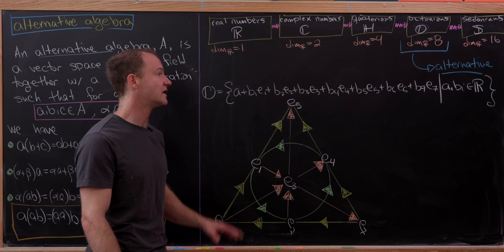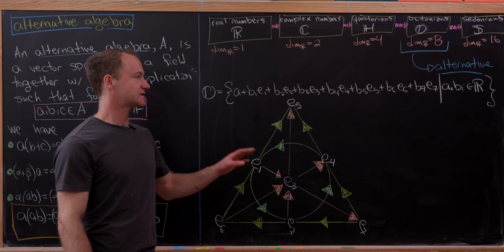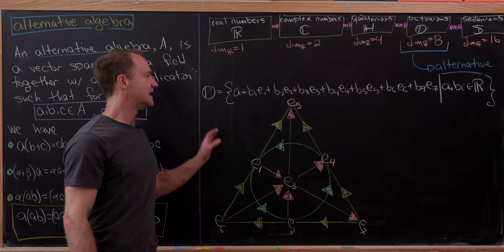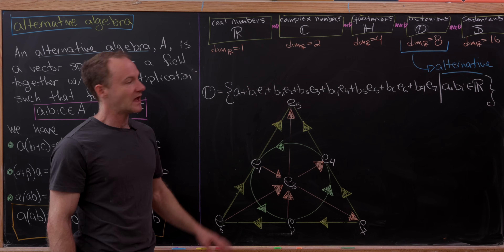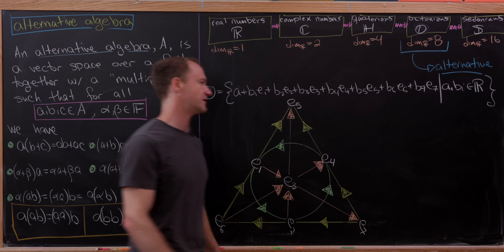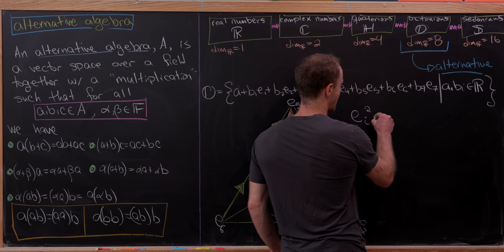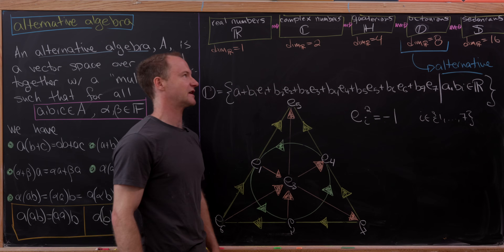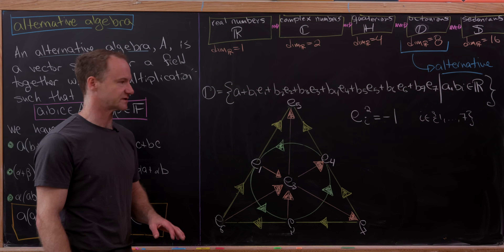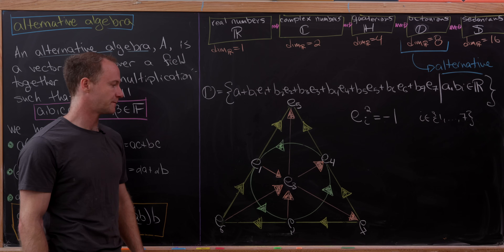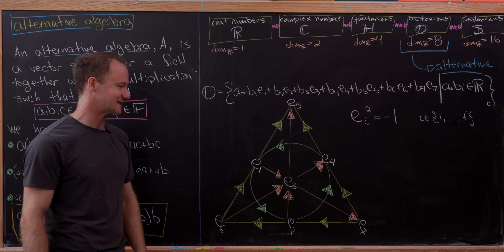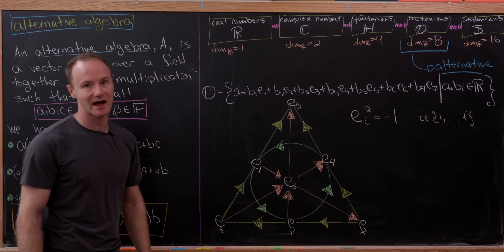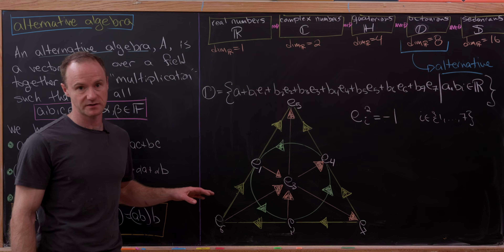On to the octonions as our example of an alternative algebra. It's eight-dimensional with basis vectors: the number 1 as the multiplicative identity, and vectors e1 through e7. Each of e1 through e7 satisfies e_i squared equals negative one — similar to i, j, k in the quaternions. The rest of the multiplication is described by a Fano-plane-style diagram, where to find the product of two elements you follow the prescribed path. Moving in the opposite direction picks up a minus sign, and all straight lines are treated as loops.